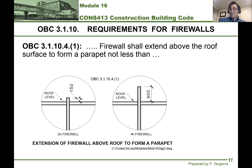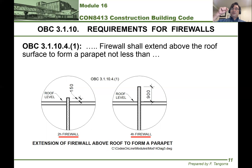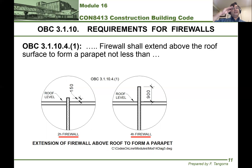What's the difference? Well, it has to do with the fire rating of the firewall that's penetrating the roof. If it's only two hours, it only needs to be 150 millimeters tall minimum. If it's four hours, it needs to be at least 900 millimeters tall.